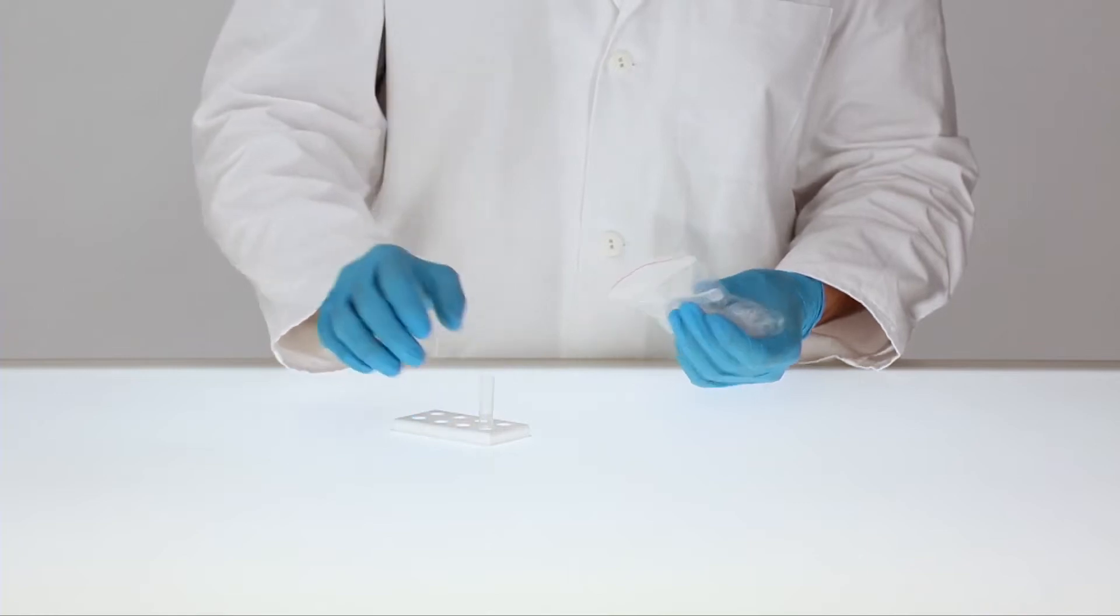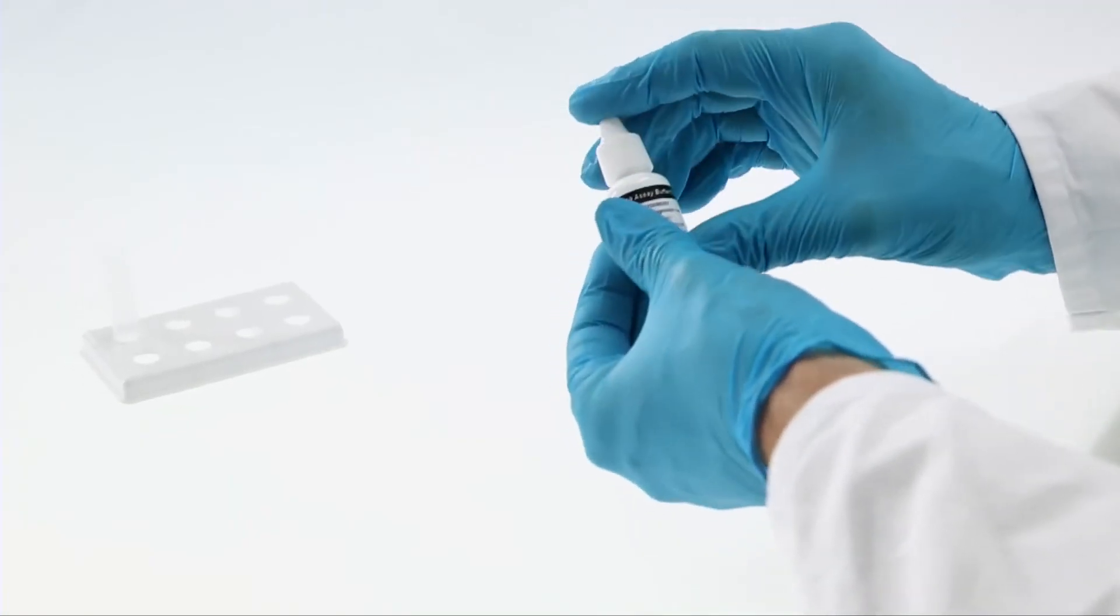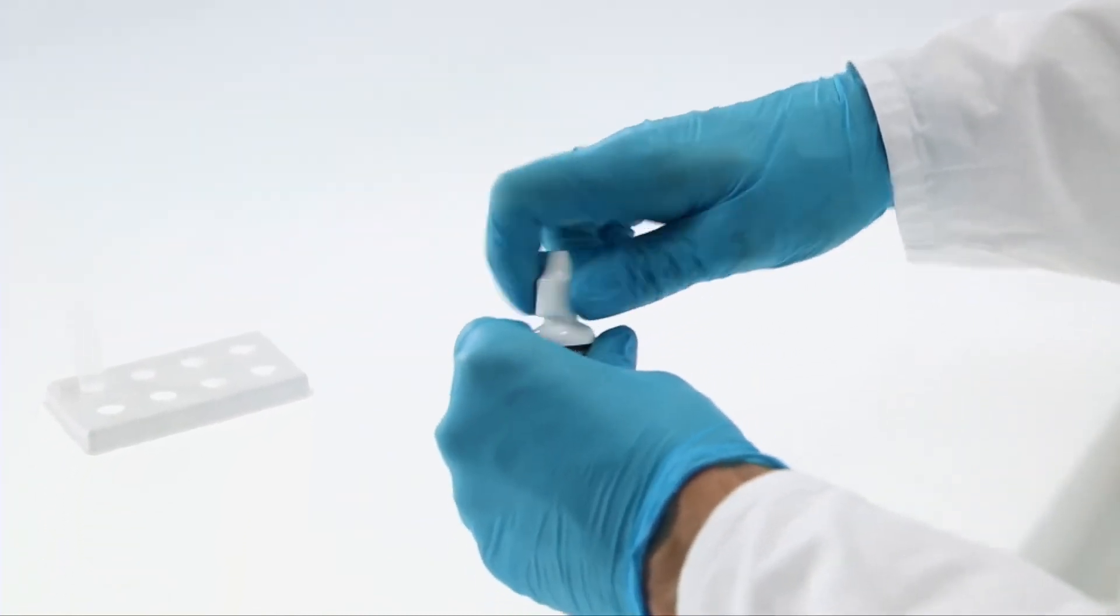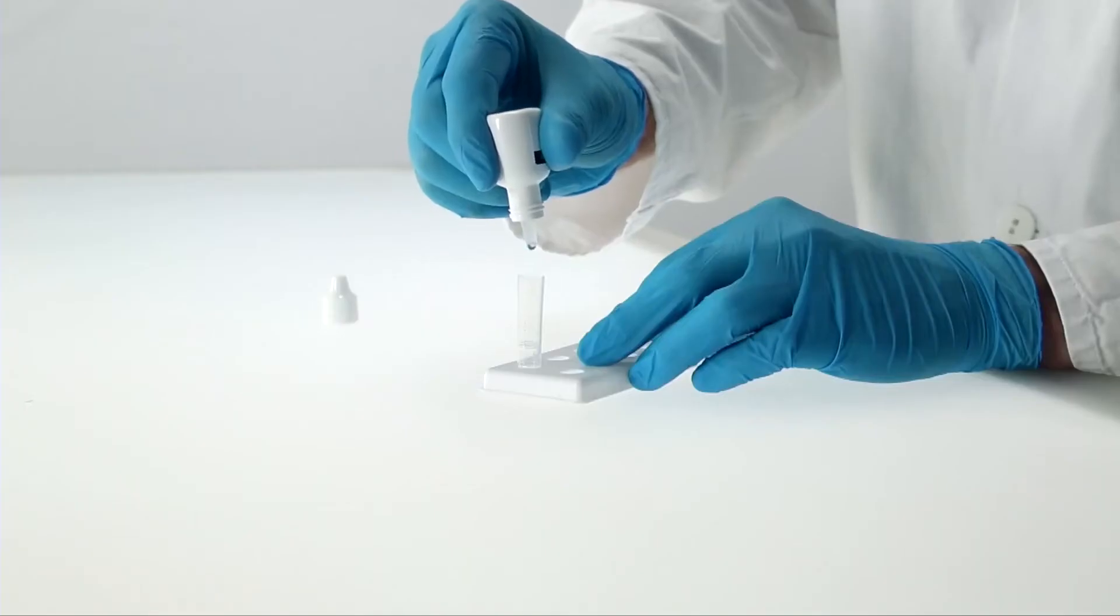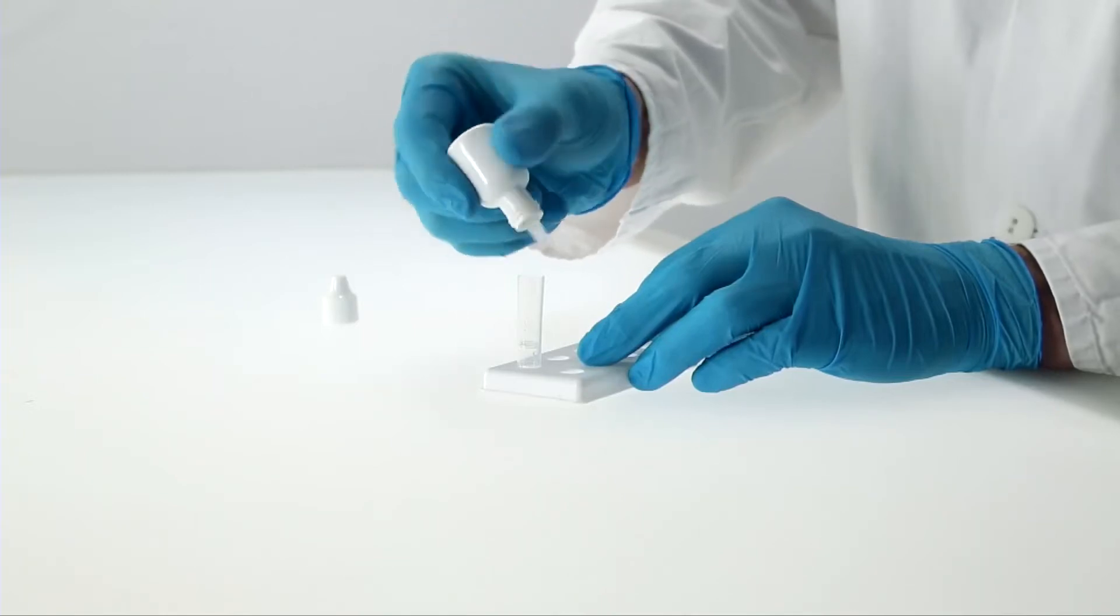Place a clean extraction tube into the reagent holder. Gently mix the buffer by carefully swiveling the bottle. Make sure to hold the buffer bottle vertically and add 10 drops to the extraction tube.